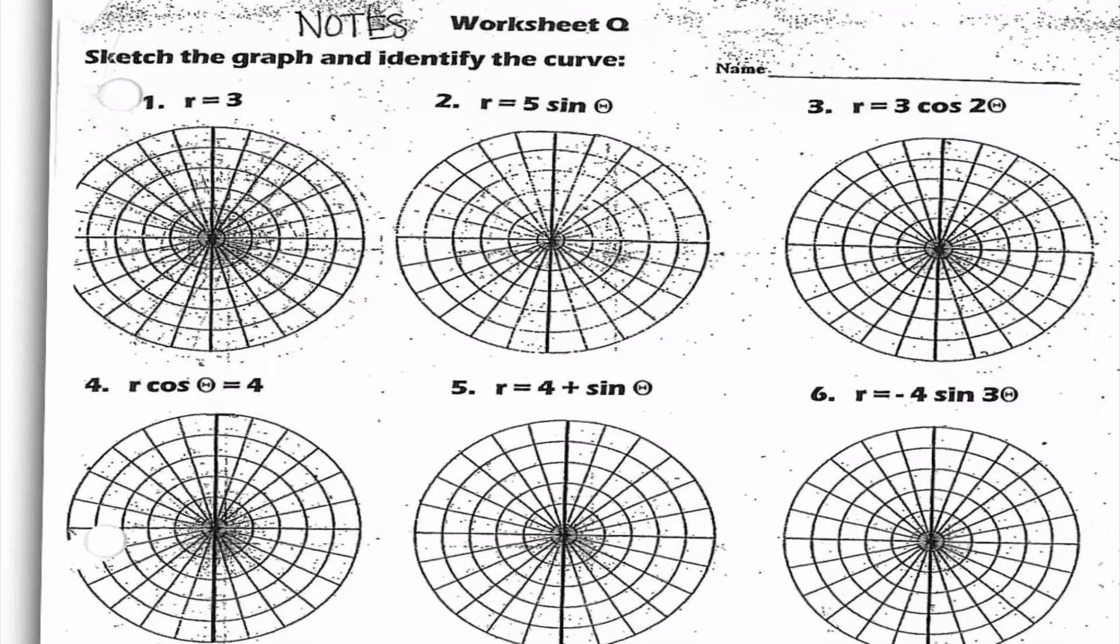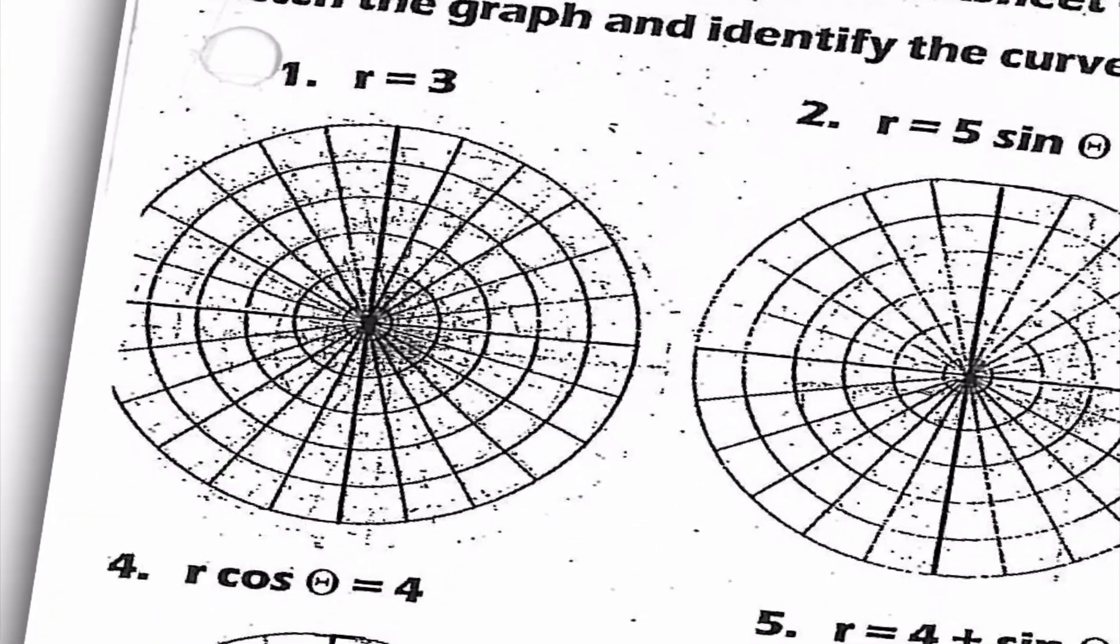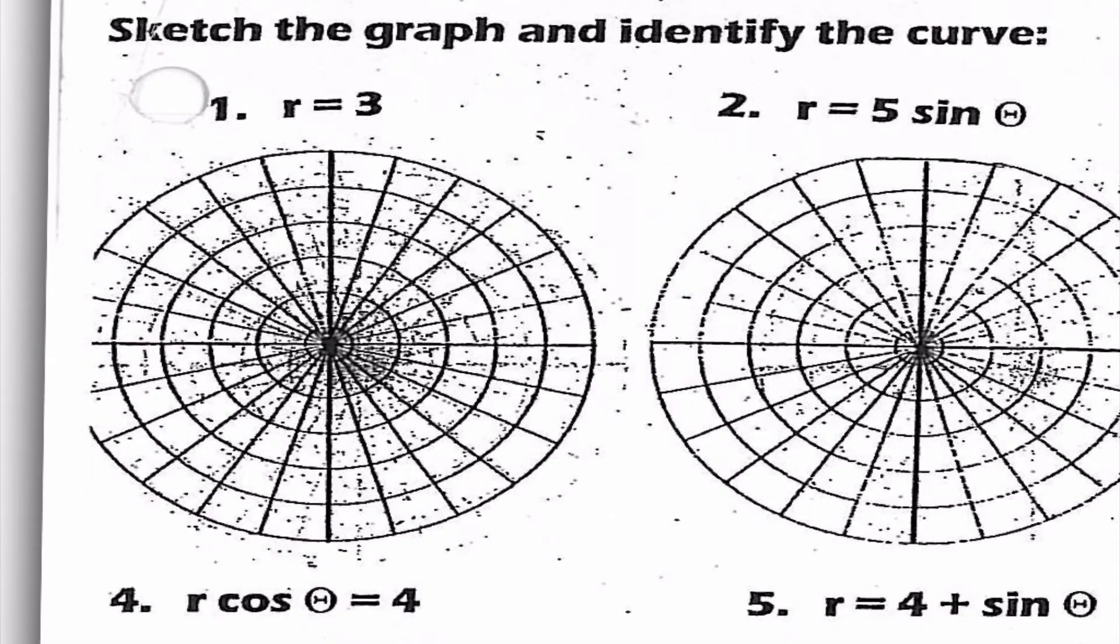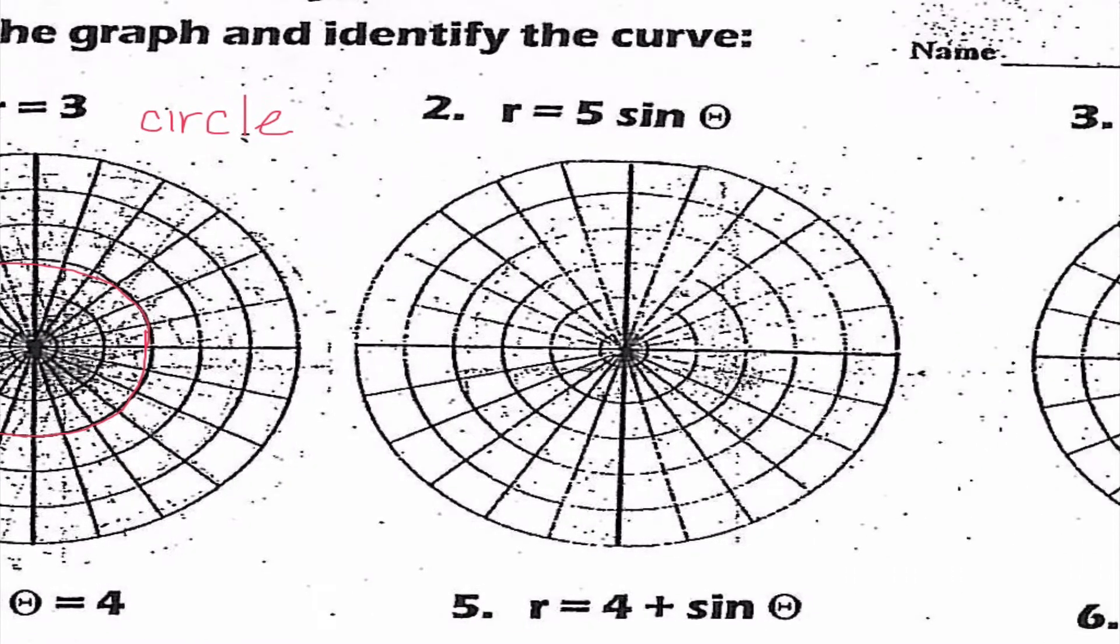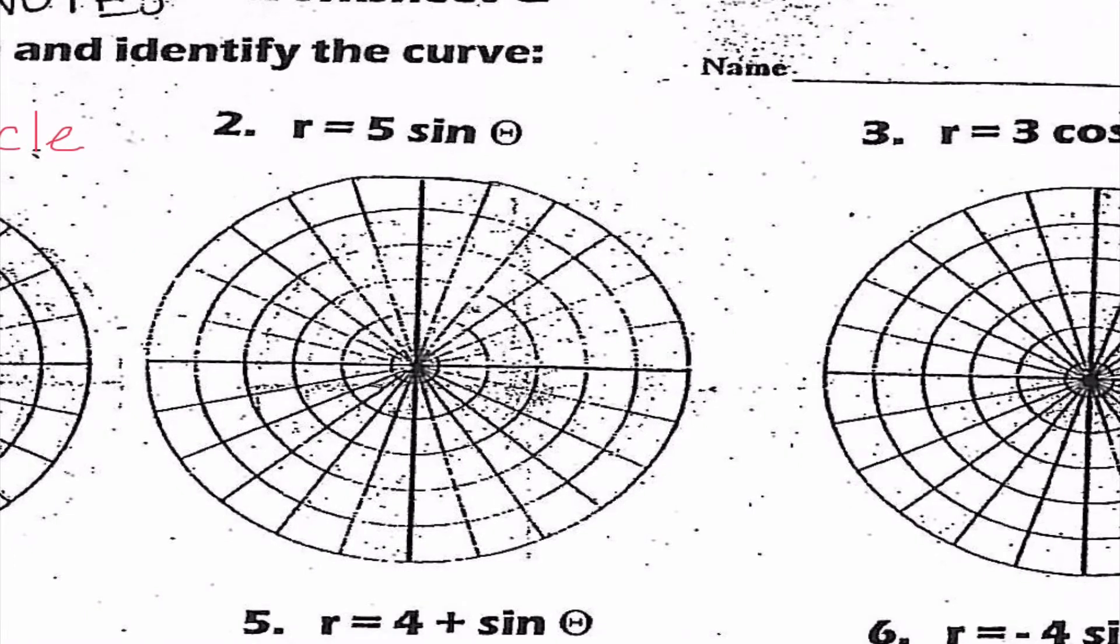So if we look at number one, it says r equals three. So I know r equals three, and I'm going to zoom in here. This looks to me like it is a circle. So this is the nice circle that all we need to do is go out three and draw our circle around that third.